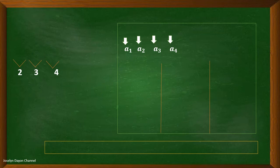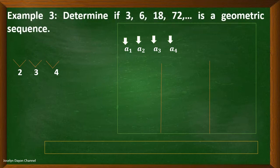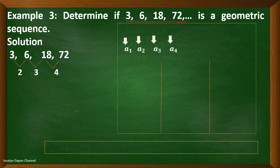Moving on, example number 3. Determine if 3, 6, 18, 72 is a geometric sequence. Same process — determine if the ratio between two consecutive terms is constant. We divide: 6 divided by 3 is 2; 18 divided by 6 is 3. If you have observed, they are not the same. So, with that, we can already conclude that this sequence is not a geometric sequence.